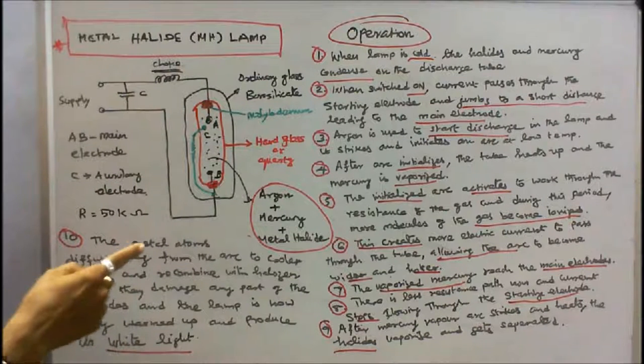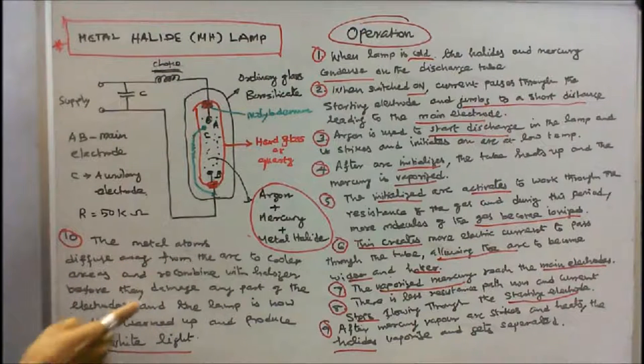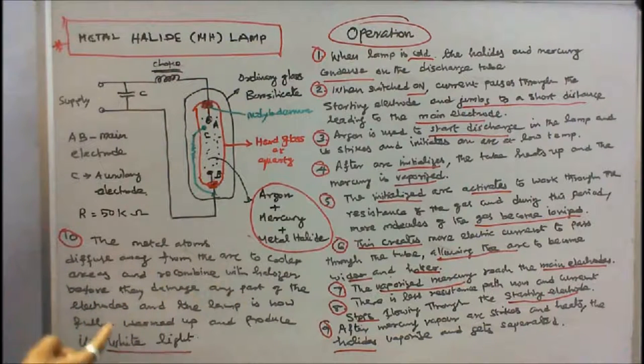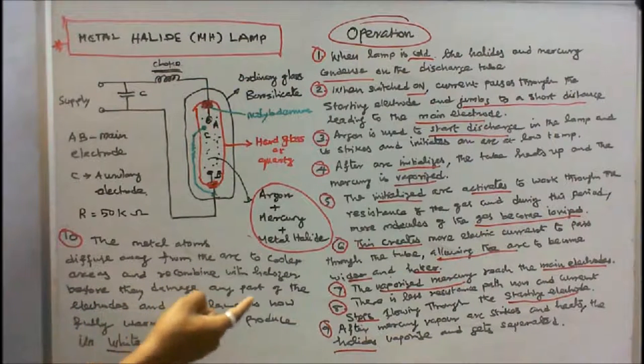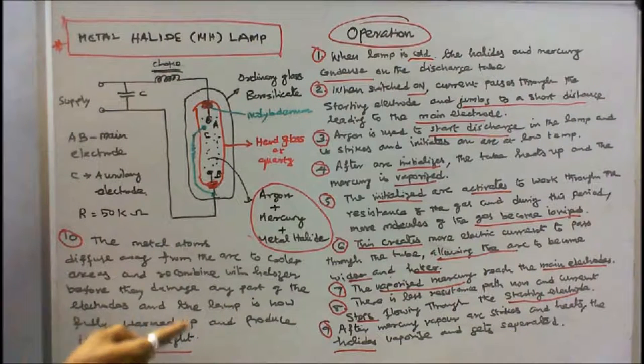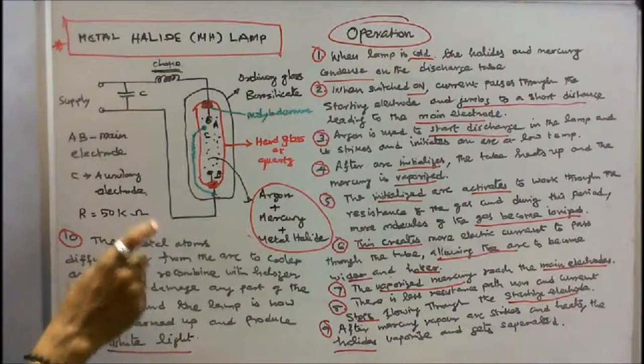The metal atoms diffuse away from the arc to cooler areas and recombine with the halogen before they damage any part of the electrodes. And the lamp is now fully warmed up and produces its white light. This is the operation of metal halide lamp.